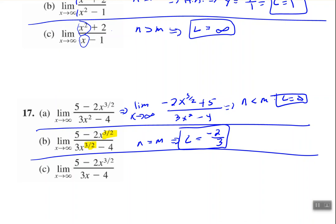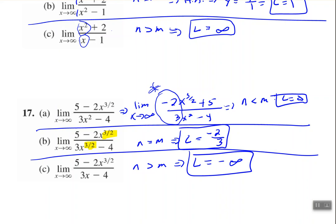For part c, n is greater than m, so we know this is either approaching positive infinity or negative infinity. The limit does not exist, but we can tell whether it goes towards positive or negative infinity. As x approaches positive infinity, we're using positive numbers. If we look at our leading coefficients, we have a negative over a positive. Plugging positive numbers in for x, we will continue to have a negative over a positive, and a negative divided by a positive is negative. Therefore, although the limit does not exist, it approaches negative infinity.